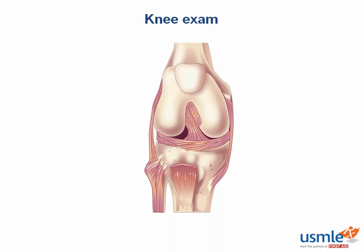Let's start by talking about the anatomy of the knee. There are only a handful of key structures here. This is an anterior view of the knee — here's the femur, the patella, the tibia, and the fibula. The patellar tendon is cut away so we can take a look at the ligaments inside the knee.